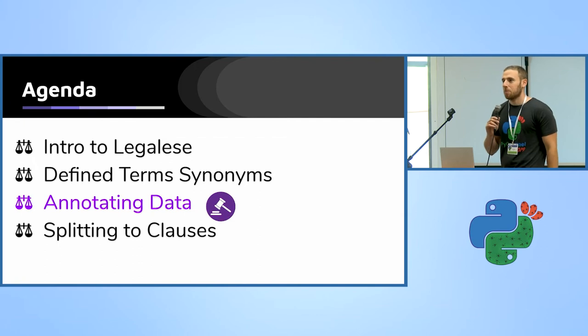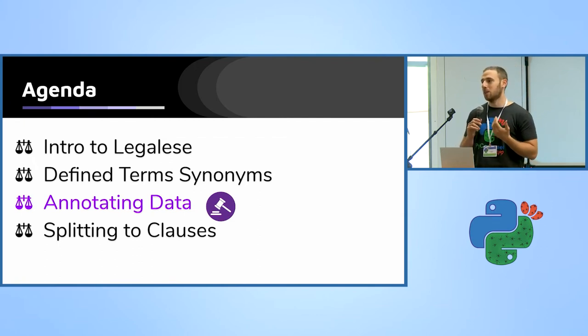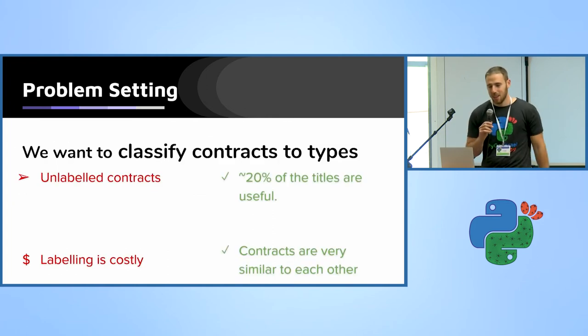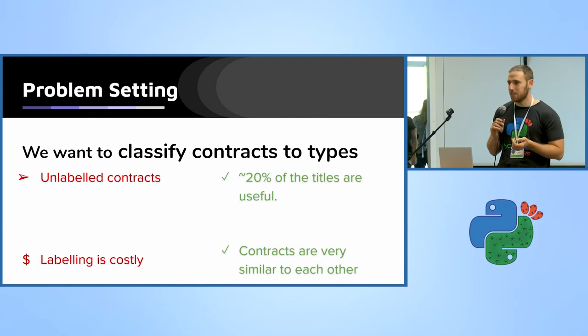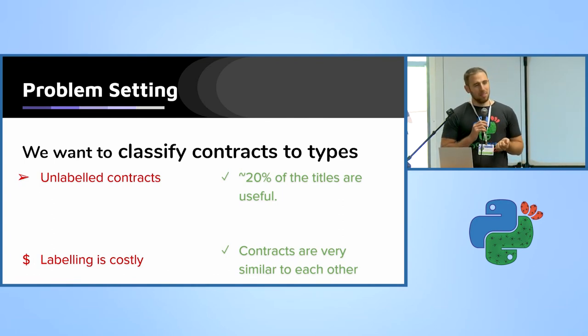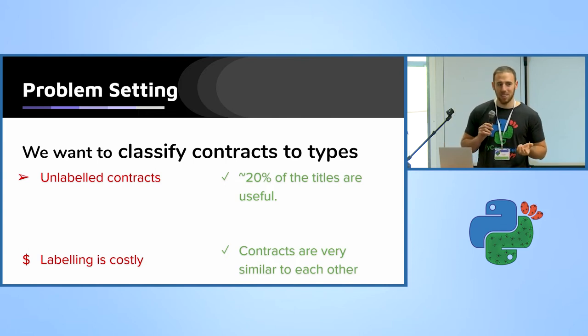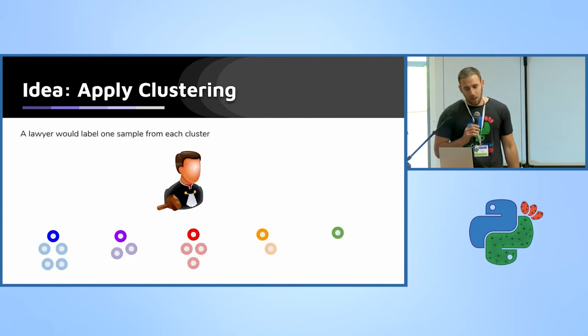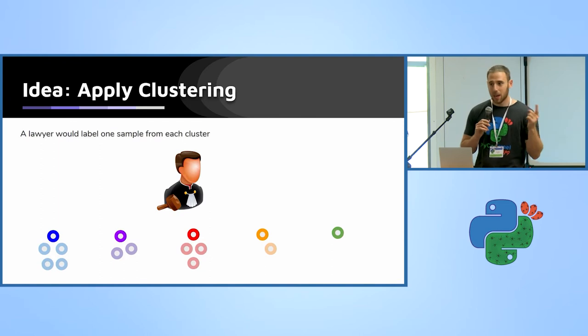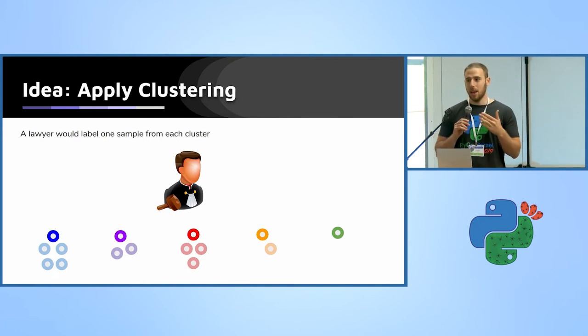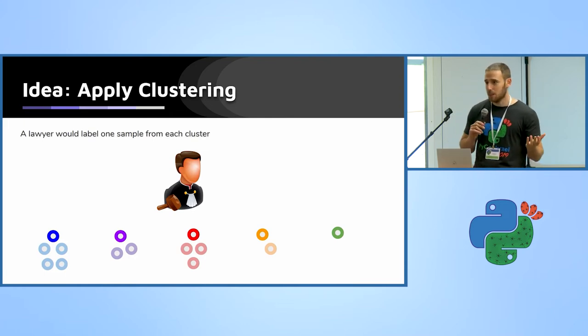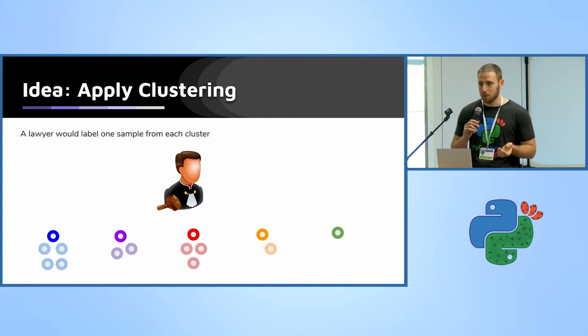So talking about labeled data, we start talking about our next use case, which will be how to annotate data when your annotators are super expensive, in our case, lawyers. So this is the problem setting: we have a lot of unlabeled contracts, we have a few very expensive American lawyers. But contracts are very similar to one another. Lawyers love to copy and paste, so why not take advantage of this fact? Okay, so this is the main idea: the main idea is to apply clustering and then have the lawyer label one sample from each cluster. Then we take the label that the lawyer labeled and apply to the rest of the cluster, hopefully not introducing too many labeling errors. This is the motivation.